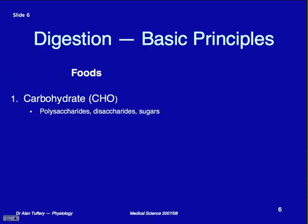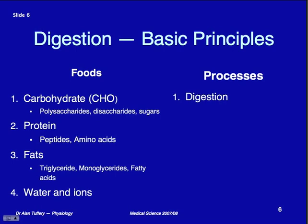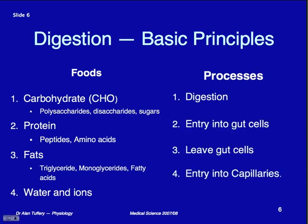So digestion: basic principles. Always stay with the basics. Carbohydrates — abbreviated CHO. The sequence: polysaccharides broken down into disaccharides — two sugars stuck together — then broken down into individual sugars: glucose, fructose. Proteins: big molecules broken down into peptides — small chains of amino acids — then individual amino acids. Fats come as triglycerides, broken down into monoglycerides and free fatty acids. Water and ions are already small — just absorb them. So the process has four steps: digestion, enter into gut cells, leave gut cells, and enter into capillaries. Get the structure right and everything else will follow.